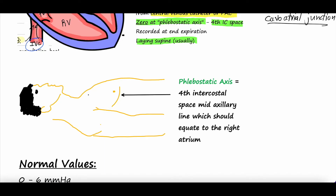Here's a human drawn laying on their back. The fourth intercostal space is the space between the fourth and fifth ribs. If you count the ribs — one, two, three, four, five — the fourth intercostal space is right there. The reason we measure at the fourth intercostal space is because that is approximately where the right atrium sits in the body.